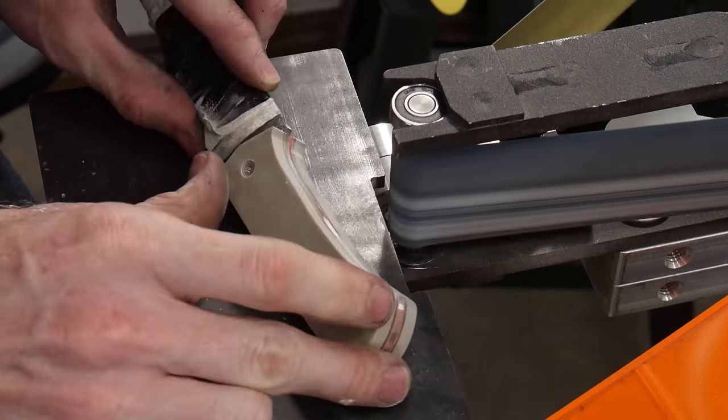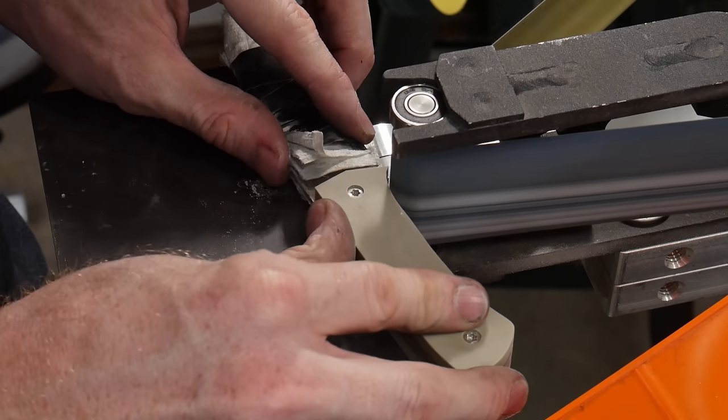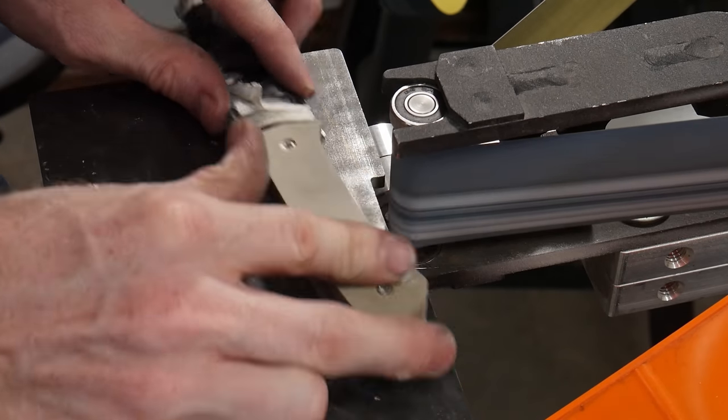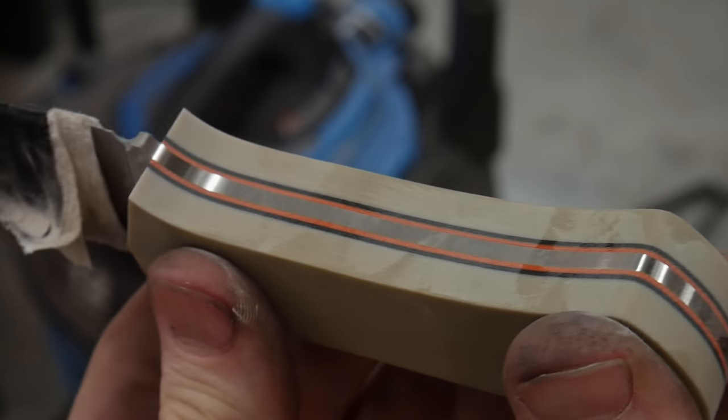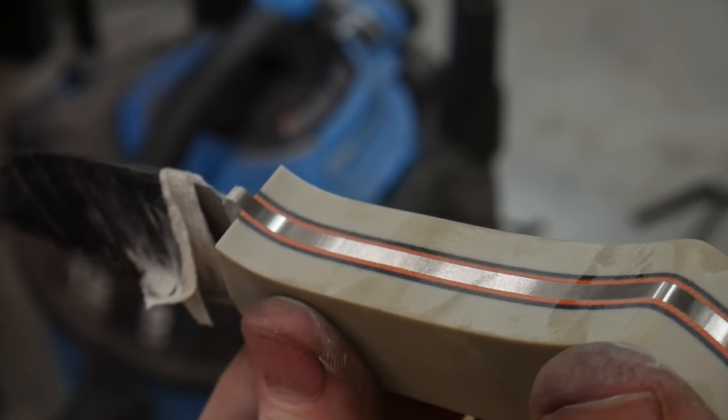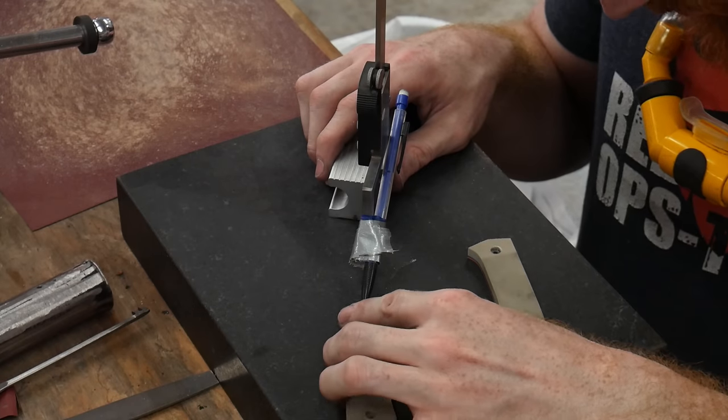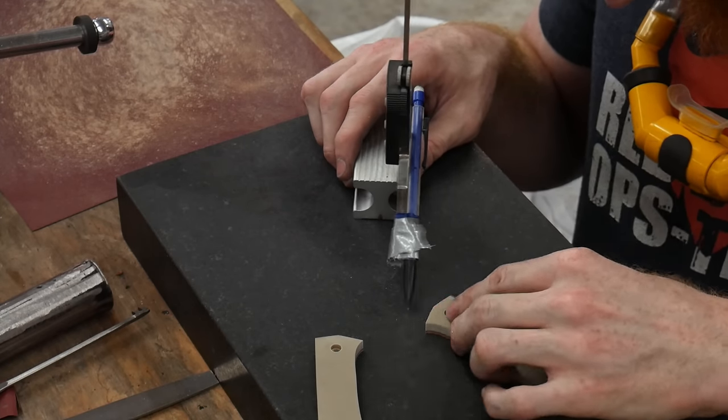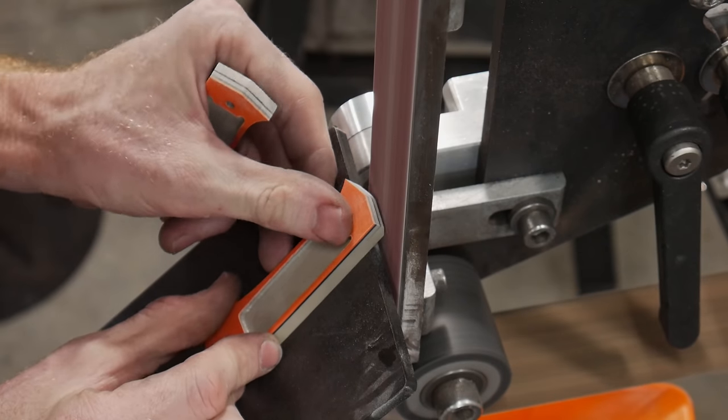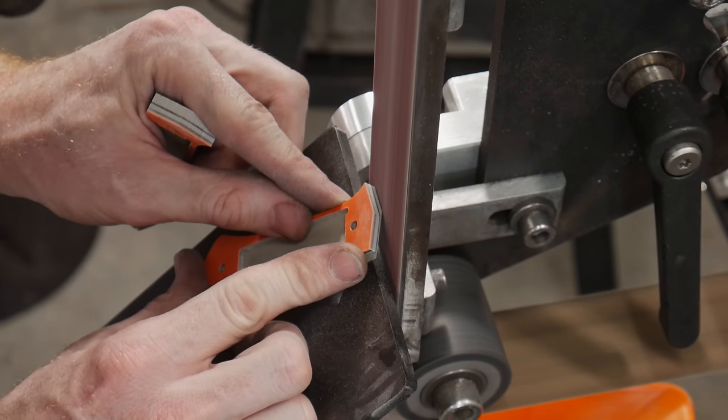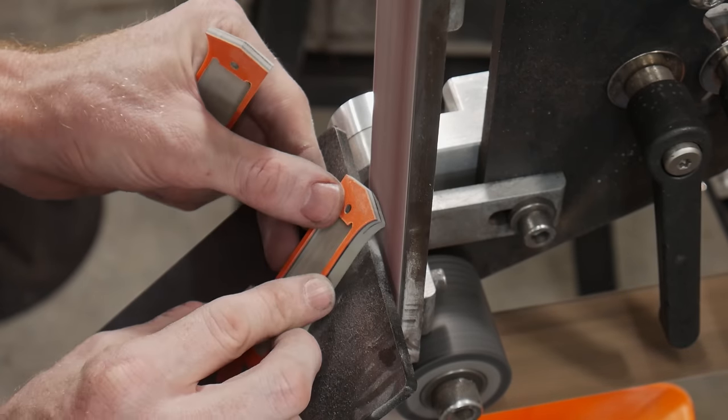After getting the scales flush with the tang, I can then once again remove the scales from the knife, attach them to each other, and do my handle sculpting without the blade in the way. The ability to add and remove the blade from the handle scales at will is really nice, to say the least. An additional benefit is that if at any point during the handle shaping process you happen to scratch the blade, you can always go back to the hand sanding bench with the scales off and fix the problem. This would be an excellent handle construction for a Damascus blade, since you can protect the edge on the spine of the knife.